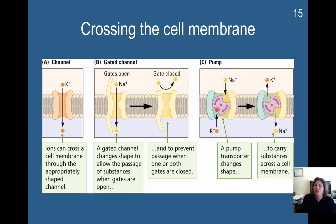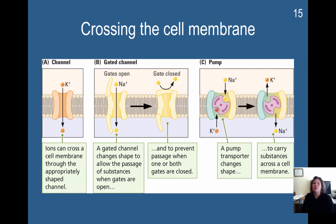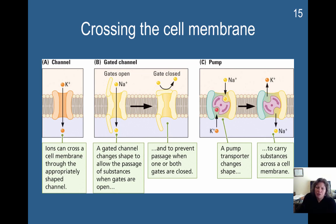The other thing that's really essential for learning about how neurons communicate is how certain things cross the cell membrane. The cell does not manufacture everything that it needs — some of it is manufactured inside, but some of it has to be delivered from outside the cell to inside. So certain information has to cross the cell membrane in a very specific way.